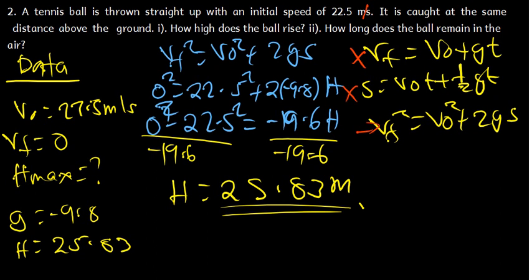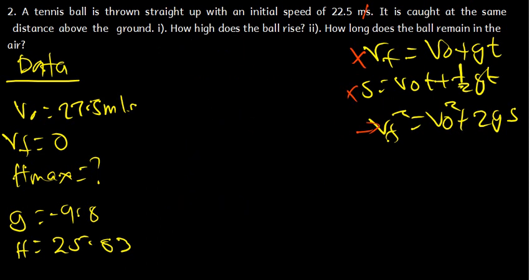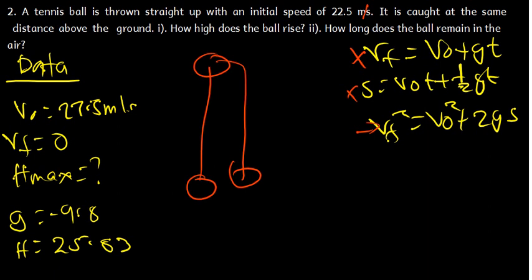The second part asks: how long does the ball remain in the air? If you throw an object up — from point A, it rises to maximum height at point B, then comes back down to point C — they want the total time from A to C. Under free-fall motion, the time it takes from A to B is the same as the time from B to C. So we find the time from A to B and multiply by 2 to get the total time from A to C.